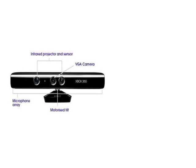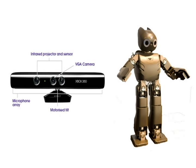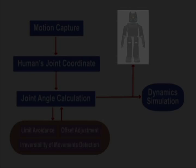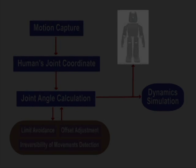In this research, with visual motion captured by a Microsoft Kinect camera and a small-sized Darwin OP humanoid robot, we propose a human imitation system that addresses the mentioned problems.